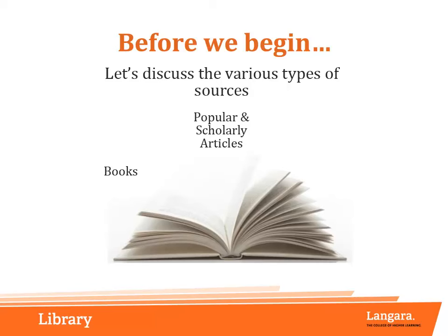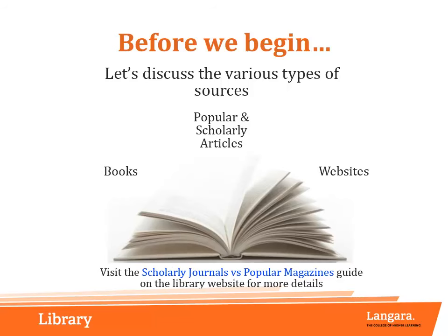Some assignments may also allow you to use websites found through internet searching. In this tutorial, we will look at several example sources that will help you apply the 5W criteria to sources you find for your projects, reports, or other research assignments. If you're unfamiliar with the differences between popular and scholarly articles, or don't know where to start looking for scholarly sources, visit the research help guides on the library website.